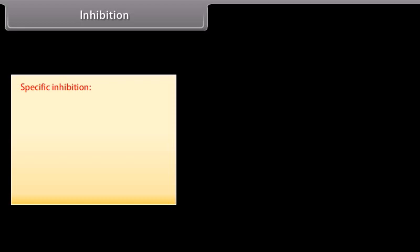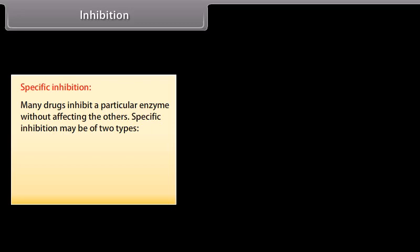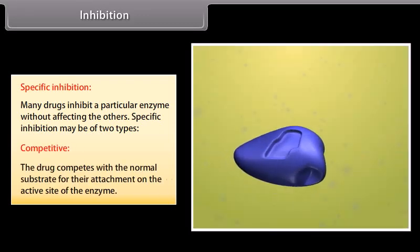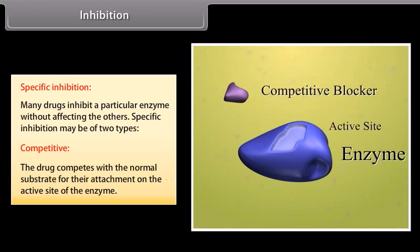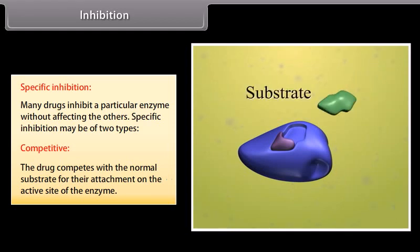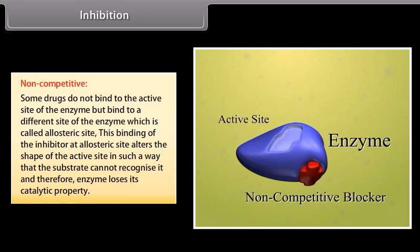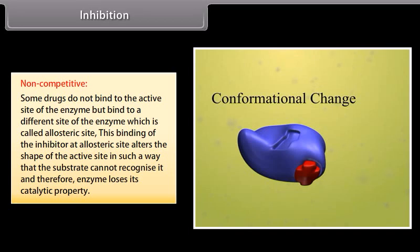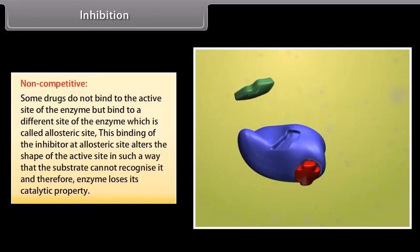Specific inhibition: many drugs inhibit a particular enzyme without affecting the others. Specific inhibition may be of two types. Competitive: the drug competes with a normal substrate for attachment on the active site of the enzyme. Non-competitive: some drugs do not bind to the active site of the enzyme, but bind to a different site called the allosteric site. This binding of the inhibitor at the allosteric site alters the shape of the active site in such a way that the substrate cannot recognize it, and therefore the enzyme loses its catalytic property.